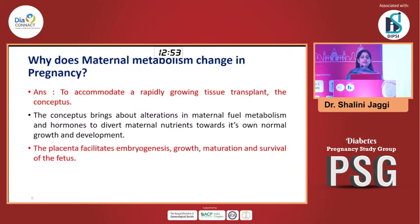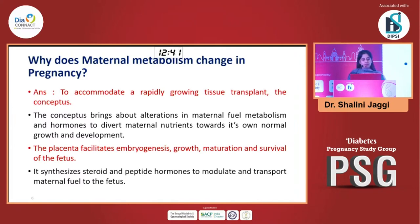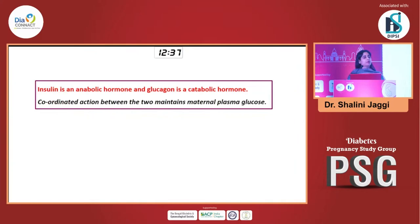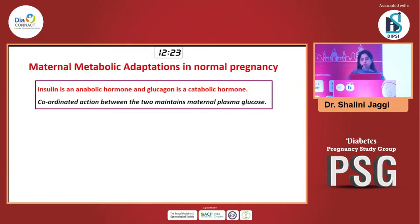So all the fuels and nutrients can be diverted towards the fetus to enable it to grow and develop, and this is facilitated by the placenta. The placenta actually has a role both in embryogenesis as well as the growth, development, and survival of the fetus. It does so by synthesizing steroids and peptide hormones that coordinate and transfer maternal fuels to the fetus. Two important hormones have a very important role: insulin, which is an anabolic hormone, and glucagon, which is a catabolic hormone, and it is essentially a coordinated action between these two that maintains maternal plasma glucose.